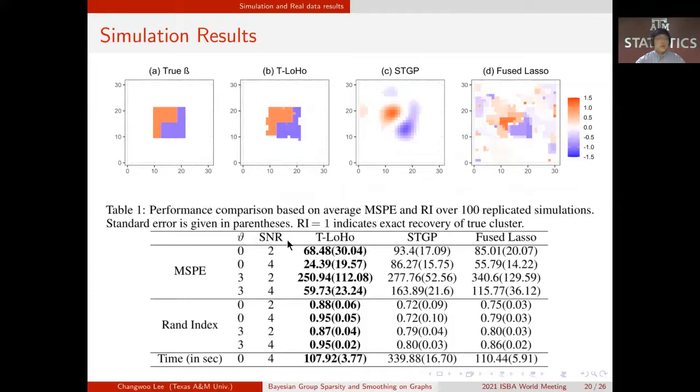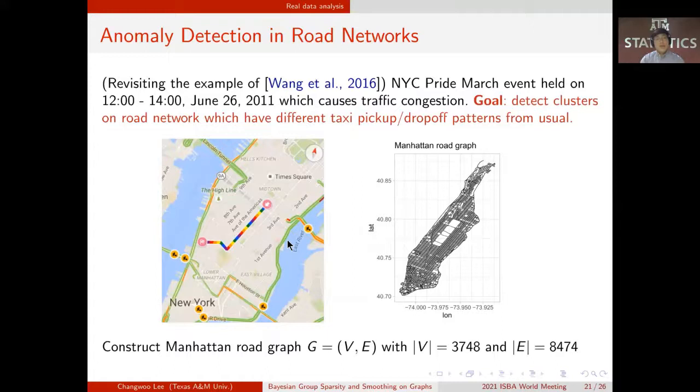Finally, we apply T-LoHo model to the task of anomaly detection in road networks. This example is previously investigated by Wang and others using Fused Lasso model. We consider a New York City Pride March event held in 2011, which causes traffic congestion along the road. The goal is to detect clusters on road networks which have different taxi pickup drop-off patterns from usual. We constructed Manhattan road graph with 3,000 number of vertices and 8,000 edges.